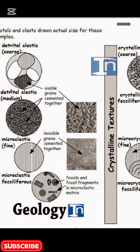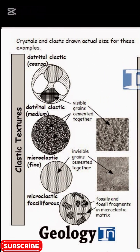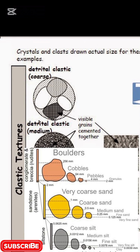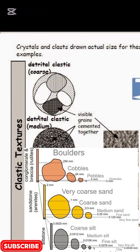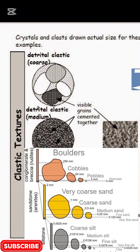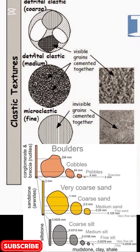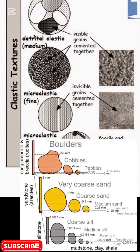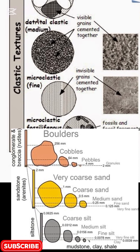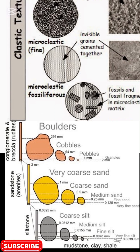To determine grain size for clastic rocks, use the grain size scale from this image to classify them. Very coarse grain is greater than 2 mm — examples are gravel and conglomerate. Coarse grain is 1 to 2 mm, as in coarse sandstone. Medium grain is 0.25 to 1 mm, typically sandstone. Fine grain is 0.062 to 0.25 mm, as in fine sandstone or siltstone.